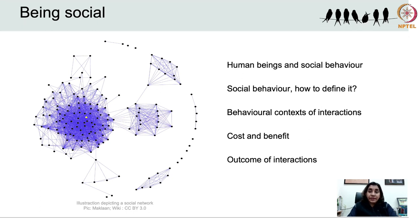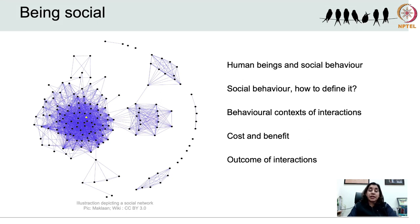Birds too display a diverse array of social behaviour. Mating and breeding behaviour is just one form of social behaviour wherein individuals belonging to the same species, typically of opposite sexes, interact with each other in order to mate, reproduce and take care of the young ones. After breeding is over, these individuals may go back to their solitary existence, pairing only for the purpose of mating. Some other birds, however, continue to live and interact in stable social groups even when they are not breeding.